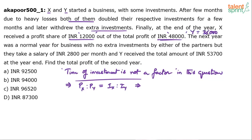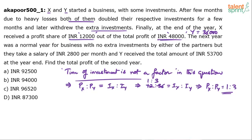So out of ₹48,000, X got ₹12,000 and the remaining ₹36,000 was obtained by Y. The profit ratio is 12,000 : 36,000 = 1 : 3, which equals the investment ratio of X to Y. You don't even need to do this calculation — it's clear directly from the question: if X gets ₹12,000 and Y gets ₹36,000, the profits are divided in a 1:3 ratio.